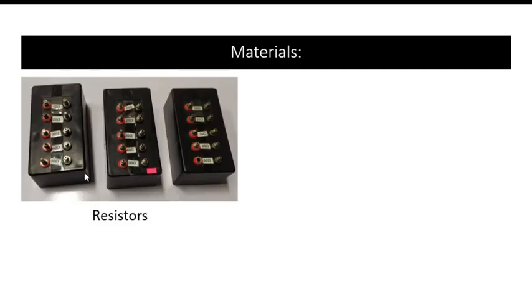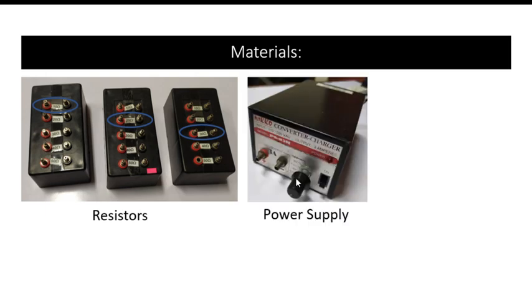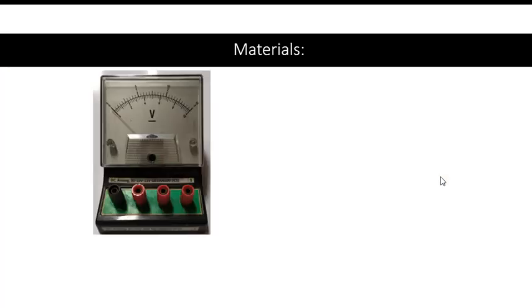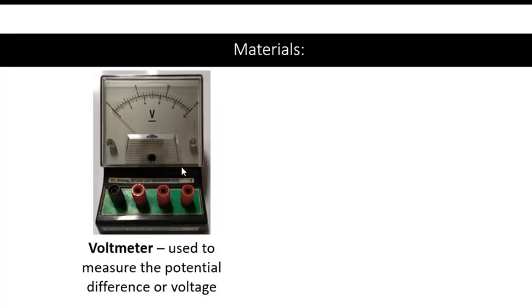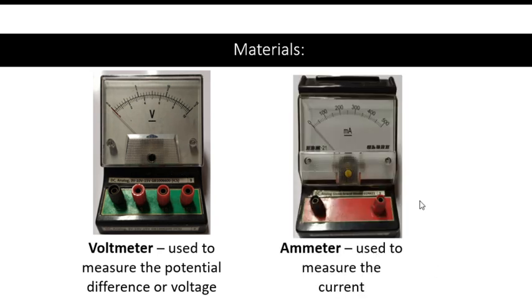The materials for these experiments are the following. We will be using carbon type resistors placed in boxes: the 10 ohms, 20 ohms, and 30 ohms resistors. We also have the source of EMF or the power supply and the connecting wires. We also have the voltmeter that will be used to measure the potential difference or voltage, and the ammeter that will be used to measure the current.